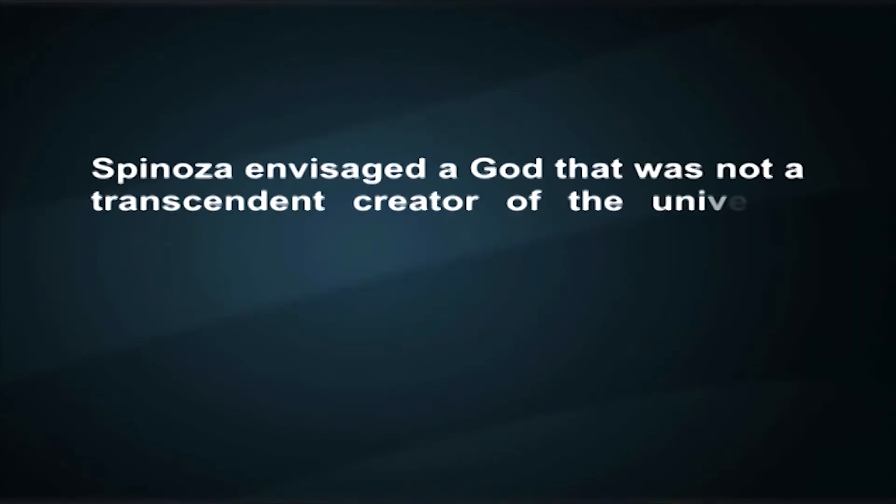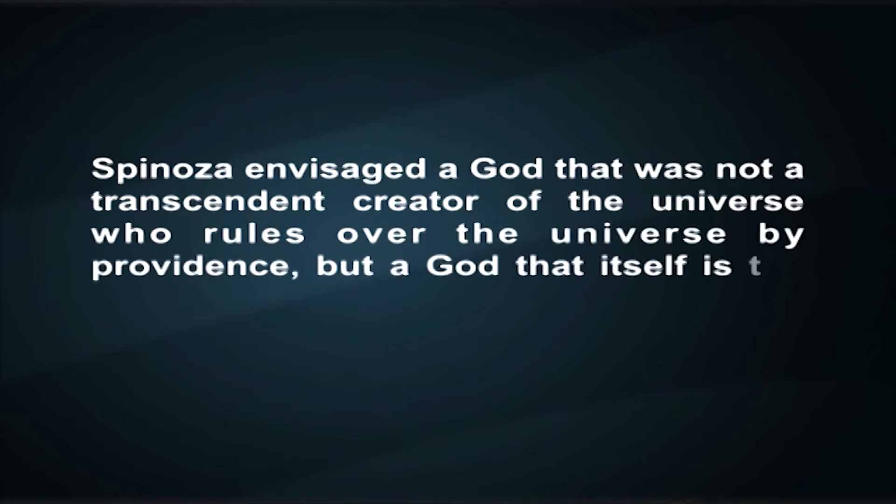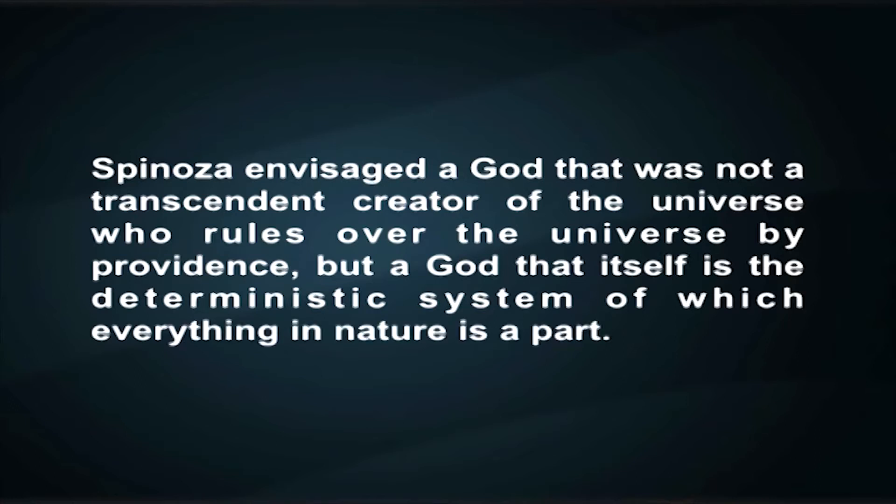Following on from this analysis, Spinoza saw God and nature as just two names for the same reality of the universe, essentially a kind of pantheism. Thus, he believed that there was just one set of rules governing the whole of reality, and that the basis of the universe was a single substance of which all lesser entities are actually modes or modifications. Spinoza's God or nature was therefore a being of infinitely many attributes of which extension and thought were but the two that we can understand. He envisaged a God that was not a transcendent creator of the universe who rules over the universe by providence, but a God that itself is a deterministic system of which everything in nature is a part. Thus, for Spinoza, God effectively is an infinite natural world and he has no separate personality, nor is he in some way outside of nature that is supernatural.